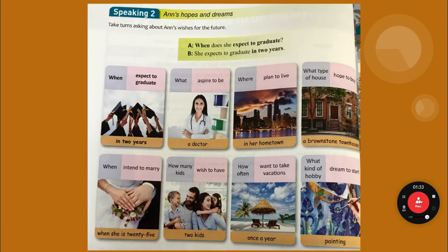Brownstones are usually found in older places like New York, Philadelphia, and San Francisco. When does she intend to marry? 'Intend' means you want to. She intends to marry when she is 25. How many kids does she wish to have? She wishes to have two kids. How often does she want to take vacations? She wants to take vacations once a year. What kind of hobby does she dream to start? She dreams to start painting.